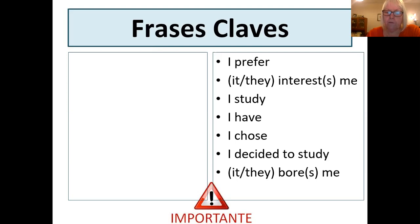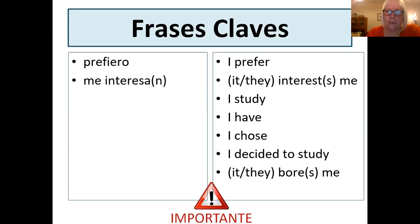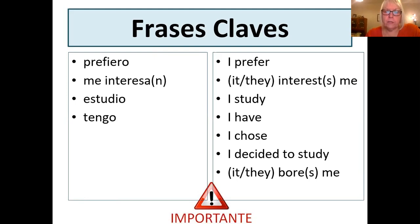Okay, so hopefully you've paused for as long as you needed to, and here are the corrections. Prefiero. Me interesa — me interesan if it's more than one thing. I study is estudio. I have is tengo. More difficult now — looking at the preterite tenses. I chose: the verb is elegir, so elegí.